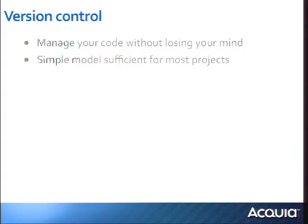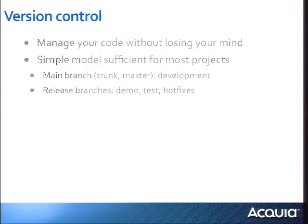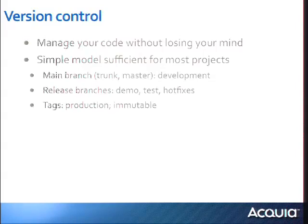There's a very simple model that works — the main branch, release branch, and tag model. The main branch, called trunk in SVN or master in Git, is where you do your live development. Developers put patches there and do initial integration. You create a release branch when you want something to demo to your client or when it's a release candidate. When that release branch is ready to go out, you make a symbolic tag — a circle around that exact code — so you know what was deployed on that day. The tag is immutable.